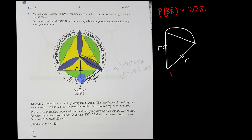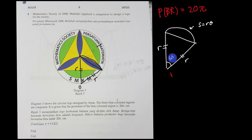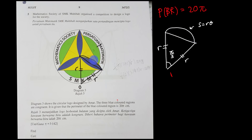Because each of the angles is 60 degrees, if I want to find the arc length I use the formula s = rθ. We cannot use degrees, so I convert 60° to π/3, since π/3 equals 60 degrees. This gives me one of the arc lengths.